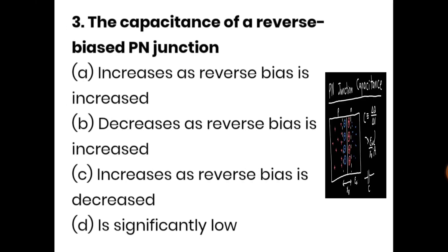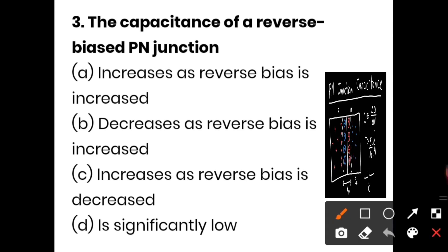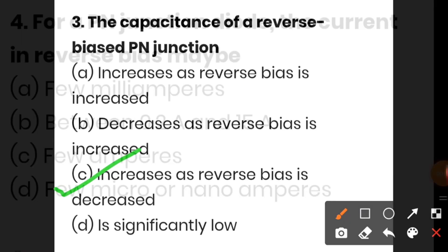The next question is: what is the capacitance of a reverse-biased PN junction? Option A — it increases as reverse bias is increased. Option B — it decreases as reverse bias is decreased. Option C — it increases as reverse bias is decreased. Option D — it is significantly low. In a reverse-biased junction, the capacitance increases as reverse bias is decreased, so option C is correct.